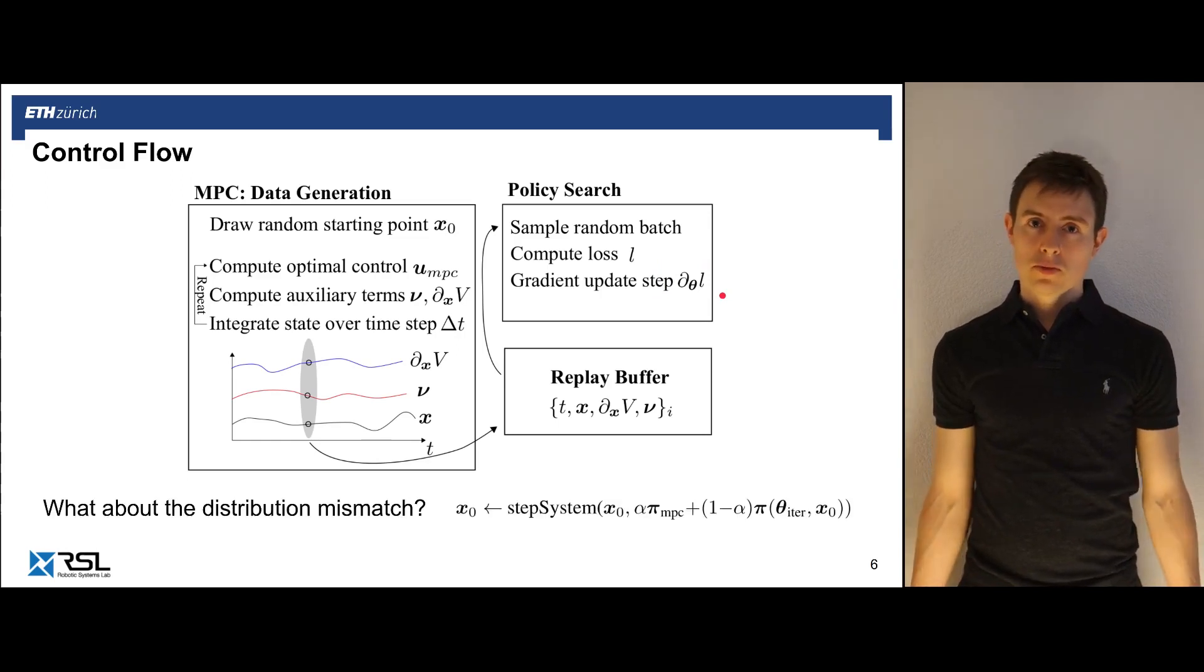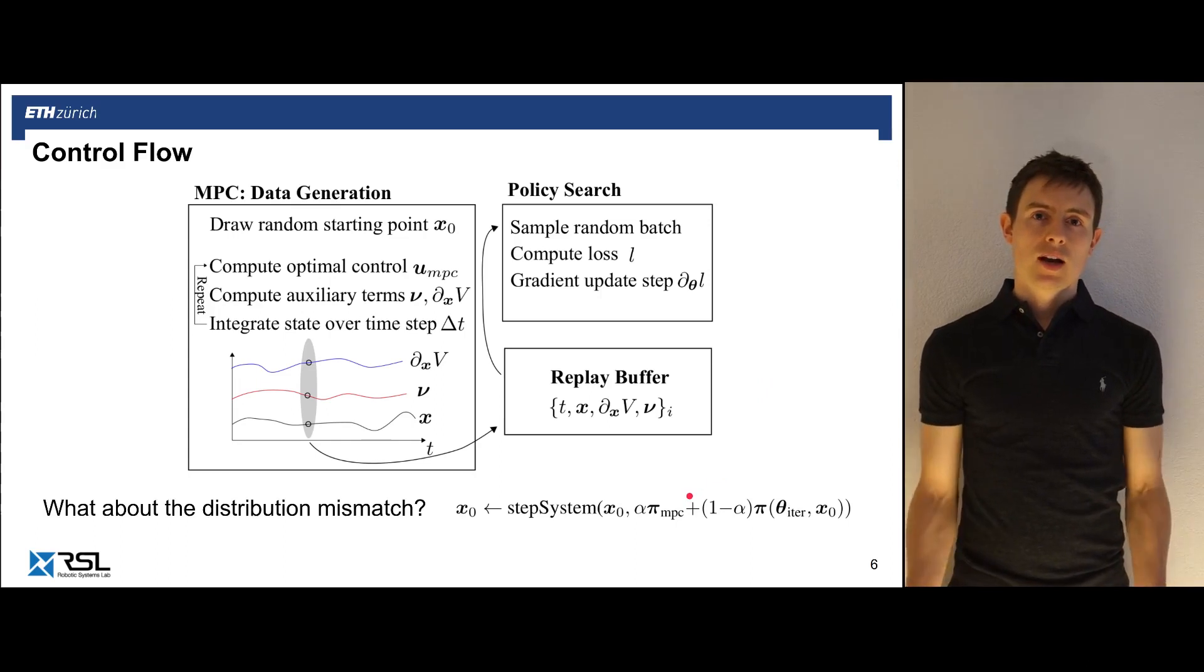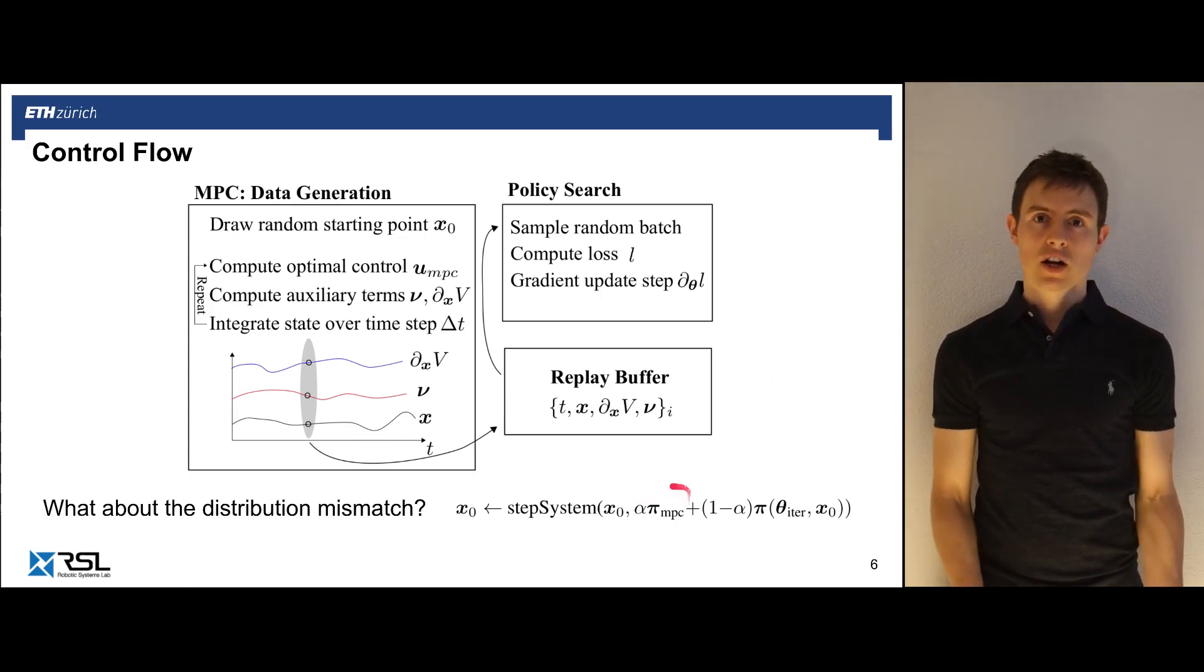So what about distribution mismatch? Well, how we address this in our case is, we allow the MPC at the beginning to drive the system entirely such that it remains stable. As the learned controller becomes more advanced, it is given more and more weight by decreasing this alpha parameter, and thereby it gets more of a say in which states are being solved for by the MPC. Therefore, as we progress in learning, the sampling becomes much more and more on policy, and thereby reducing the distribution mismatch.